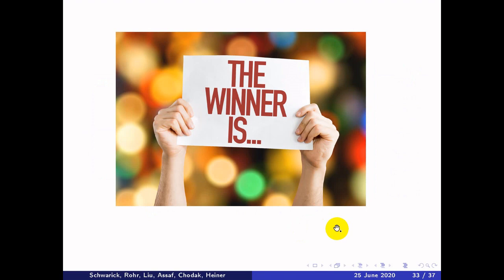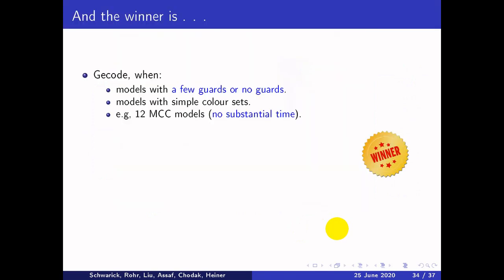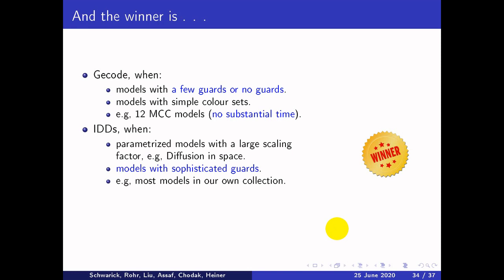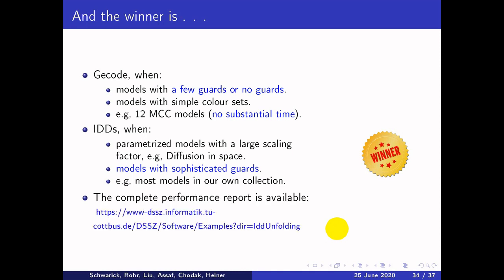There is no single winner. gcode is recommended when models have few or no guards and simple color sets — for example, the 12 MCC models requiring no substantial unfolding time. IDD is recommended for parameterized models with a large scaling factor, such as diffusion in space, and for models with sophisticated guards, such as most models in our colored Petri net collection. A complete performance report is accessible from our website.